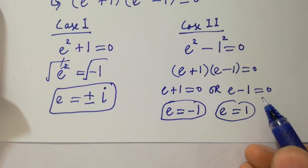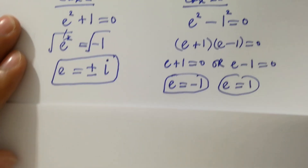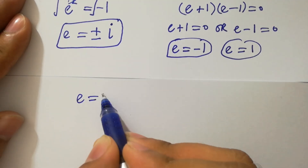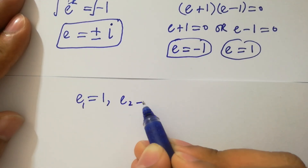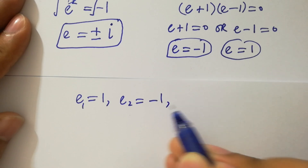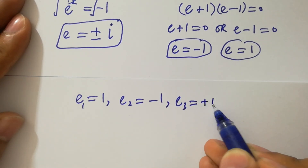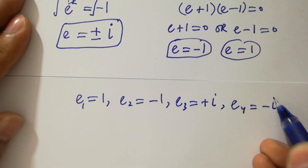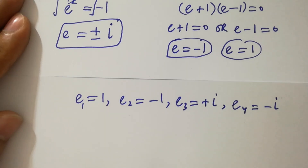So you can see we have four solutions: e1 equals 1, e2 equals minus 1, e3 equals plus i, and e4 equals minus i. In the next step, I am going to verify.